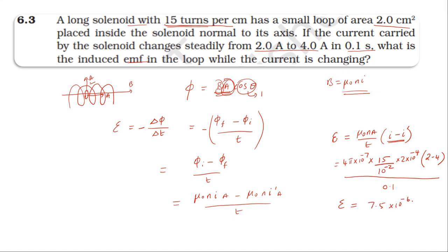This gives EMF = 7.5×10⁻⁶ volt. The magnitude, since 2 minus 4 is negative, is 7.5×10⁻⁶ volt.